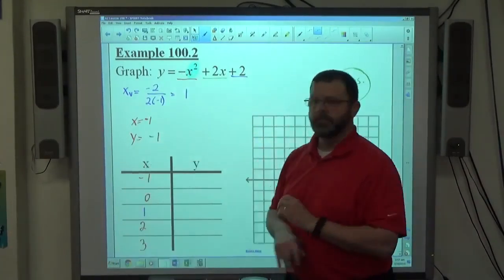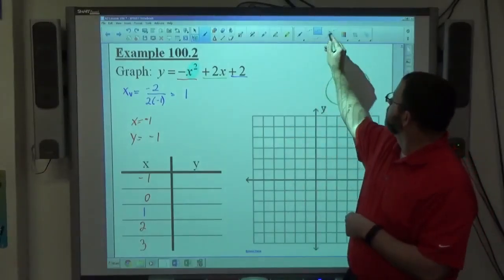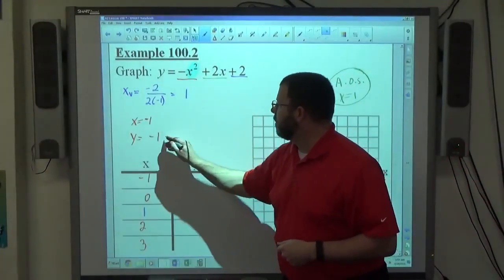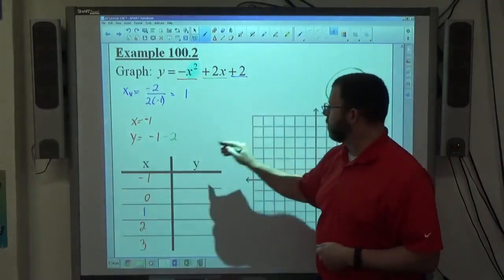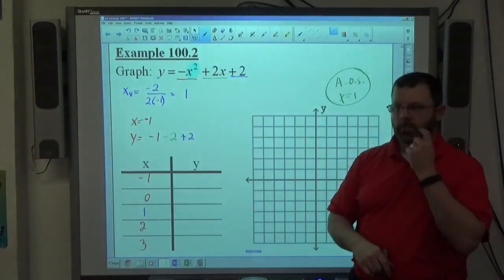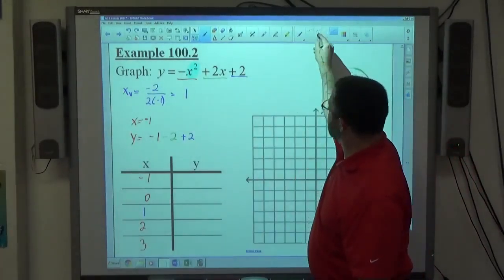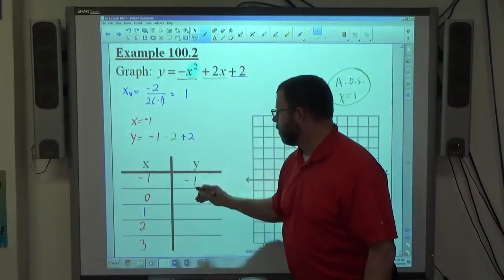Negative 1 times positive 2 is minus 2. And plus 2 is just plus 2. So if I evaluate all that out, negative 3 plus 2 is negative 1.